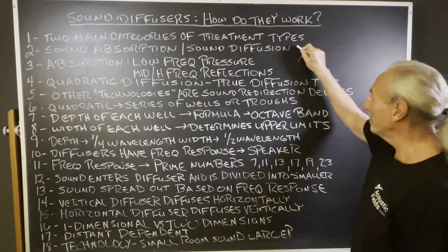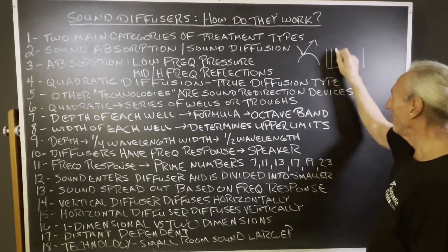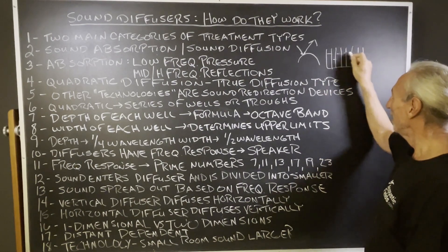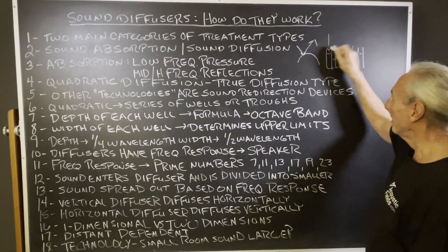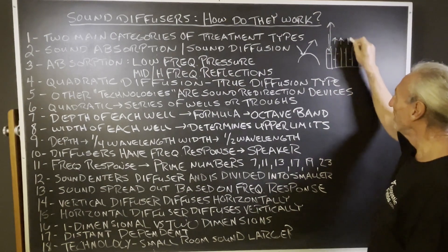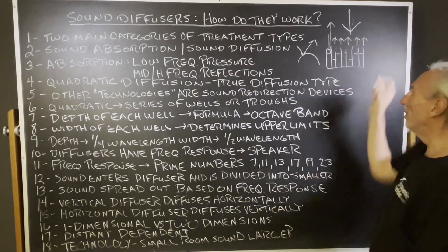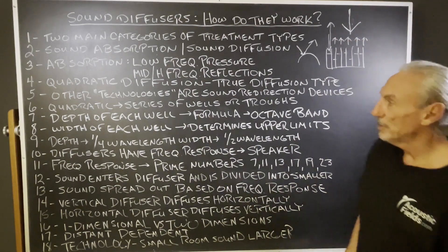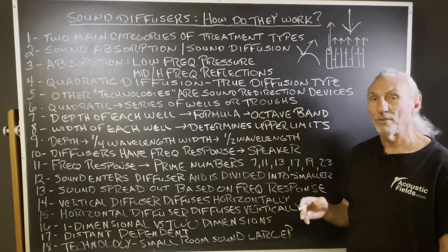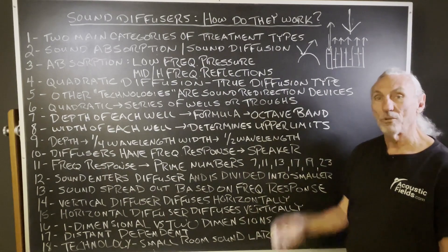A diffuser has a series of wells of different depths. Energy enters and comes back out, all divided into a smaller array of energy — big energy in, small energy out. That's the definition of diffusion. The depth of each well is based on a modulus formula that we use to calculate, and the depth of each well is based on quarter wavelength.